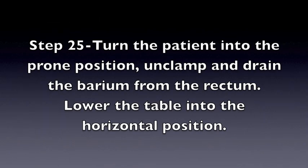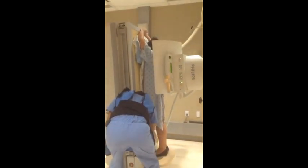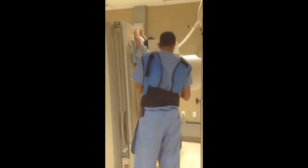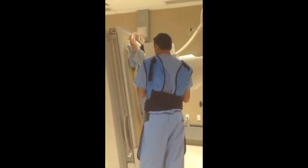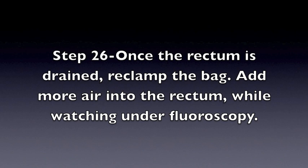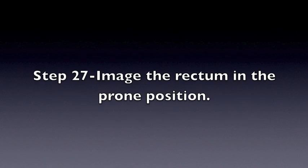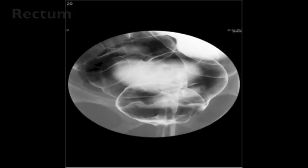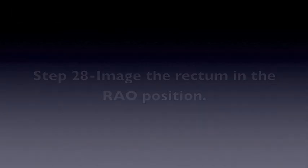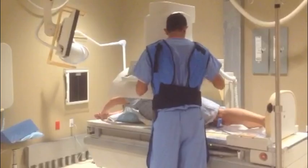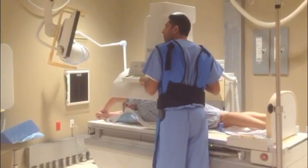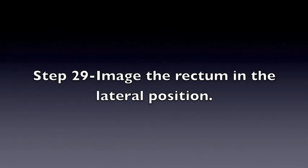Step 25: Turn the patient into the prone position, unclamp and drain the barium from the rectum. Lower the table into the horizontal position. Step 26: Once the rectum is drained, reclamp the bag. Add more air into the rectum while watching under fluoroscopy. Step 27: Image the rectum in the prone position. Step 28: Image the rectum in the RAO position. Step 29: Image the rectum in the lateral position.